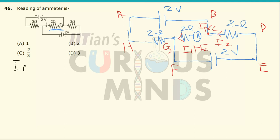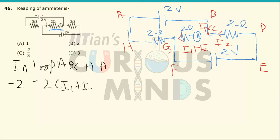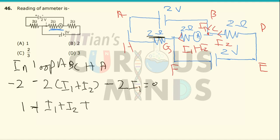Applying the loop law in loop A-B-C-H-A: since we are going in the direction of the current, it will be negative 2(i1 + i2) minus 2i1 equals zero. Dividing by 2 gives 1 plus i1 plus i2 plus i1 equals zero, so 2i1 plus i2 equals negative 1. Let this be equation number one.